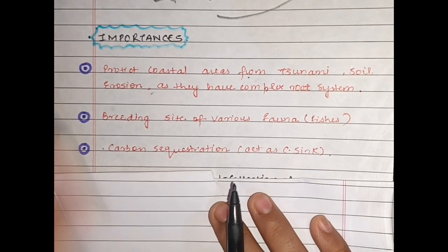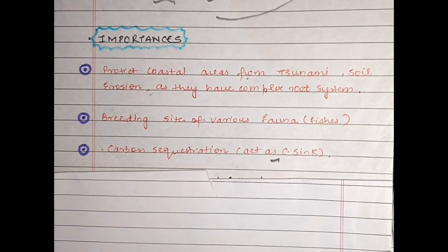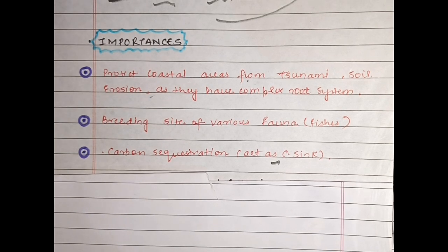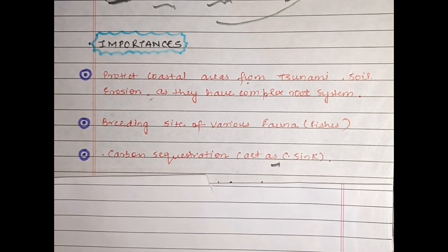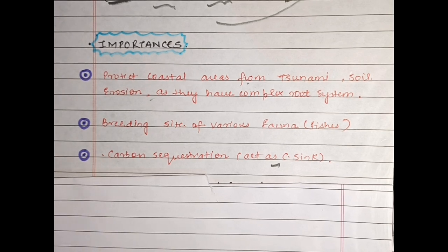The third importance is carbon sequestration — mangroves always act as a carbon sink. Carbon sequestration ek aisi process hai jis mein hum carbon ko store karke rakhte hain. Koi bhi cheez jo carbon deti hai usse carbon source bolte hain, aur koi bhi cheez jo carbon ko store kar rahi hai usse carbon sink bolte hain. Toh yahan pe jo mangroves hote hain woh carbon sink ki tarah act karte hain — carbon ko apne andar store karke rakhte hain as a biomass. Isi liye mangroves carbon sequestration mein help karte hain aur indirectly global climate change ko mitigate karne mein ek important role play karte hain.